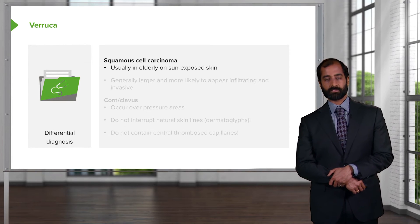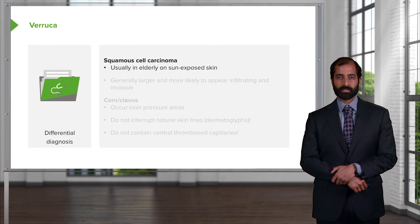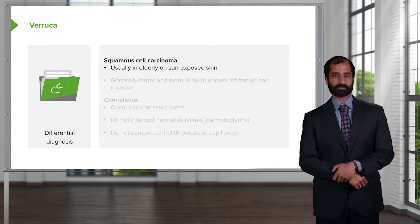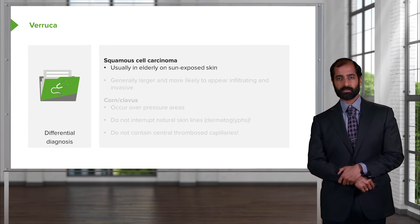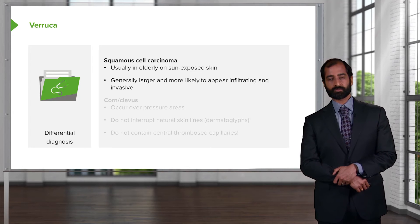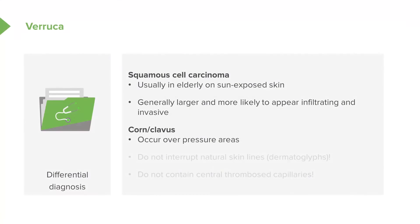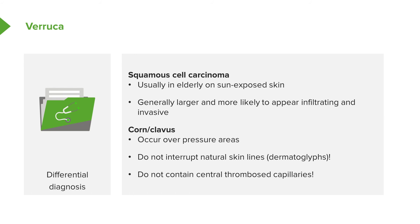Differential diagnoses for verruca: wherever verruca may be located, it might look like squamous cell carcinoma. However, squamous cell carcinoma usually has a history of sun-exposed areas, occurs in elderly individuals, and is generally larger. Another important differential is a corn or clavus, which occurs over pressure areas. Unlike verruca, a corn is predisposed by pressure, does not interrupt natural skin lines — dermatoglyphics — and does not contain central thrombosed capillaries.